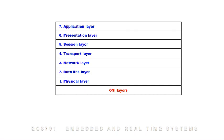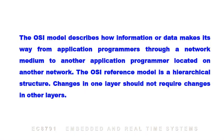The seven OSI layers are: first, the physical layer; second, the data link layer; third, the network layer; fourth, the transport layer; fifth, the session layer; sixth, the presentation layer; and the last one, the application layer. The OSI model describes how data makes its way from an application program through a network medium to another application program located on another network.